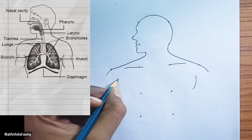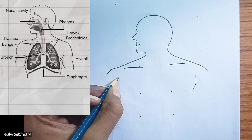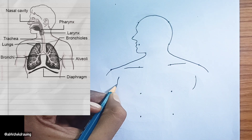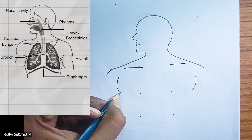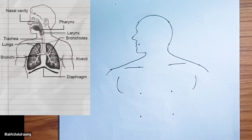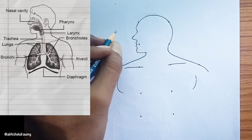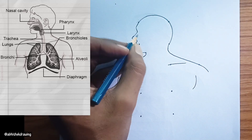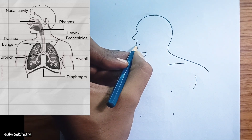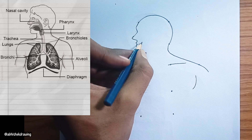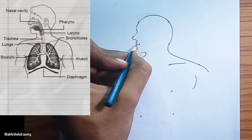Lungs. These are the primary organs of respiration, located in the chest cavity. They are responsible for the exchange of gases between the air and the blood. The diagram shows two lungs.